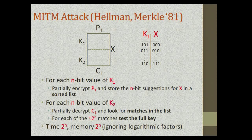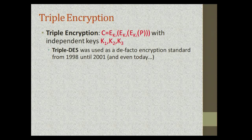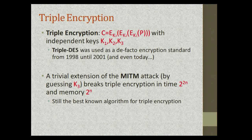Shortly after this attack, people naturally started looking at triple encryption, where you have three independent keys k1, k2, and k3, and encrypt p using k1, then k2, then k3. Triple DES was used as the encryption standard for a few years and is even used today in the banking industry. A trivial extension of the two-round attack can break triple encryption in time 2^(2n) and memory 2^n — simply by guessing one round key and applying the two-round attack — and this is still the best-known attack on triple encryption today.